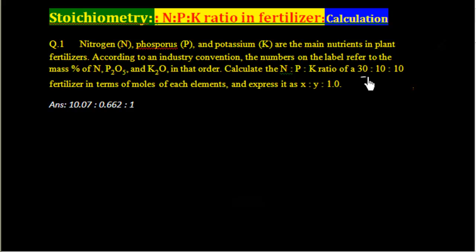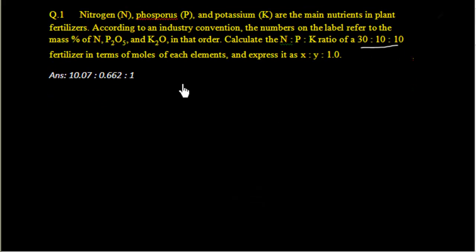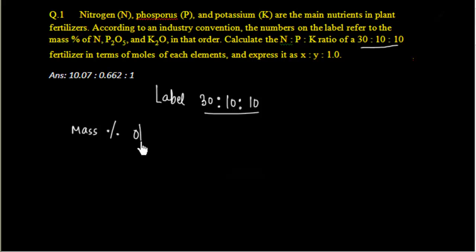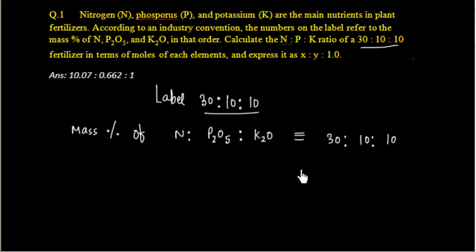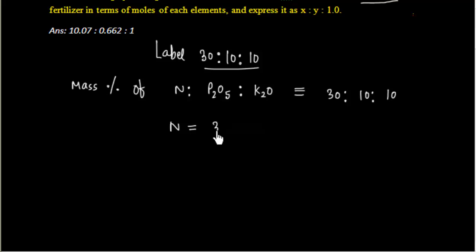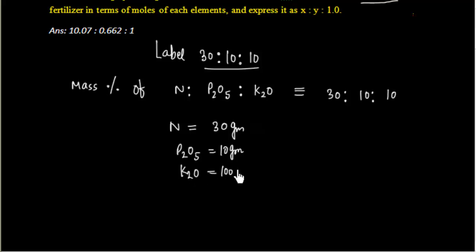It is given that the mass percentage refers to Nitrogen, P₂O₅, and K₂O. So the label 30-10-10 means 30 is to 10 is to 10, representing mass percentages of Nitrogen to P₂O₅ to K₂O. This means if I take 100 grams of sample, I will have 30 grams of Nitrogen, 10 grams of P₂O₅, and 10 grams of K₂O.